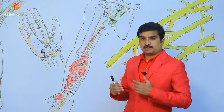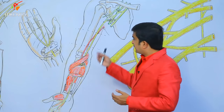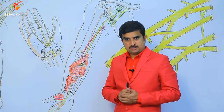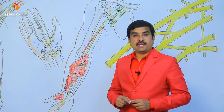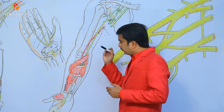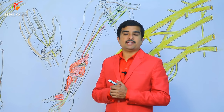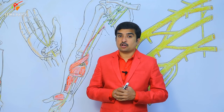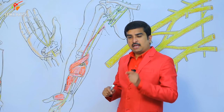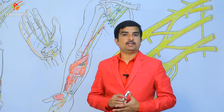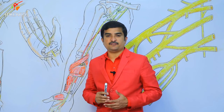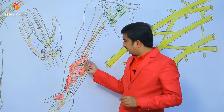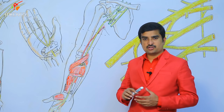Now let's discuss the branches of the median nerve, dividing them into arm, forearm, and hand. In the arm, just before entering the cubital fossa, the median nerve gives off two branches: a muscular branch to the pronator teres muscle and a vascular branch to the brachial artery.